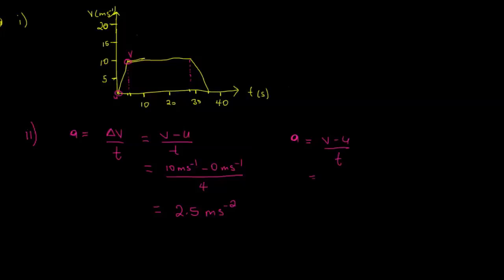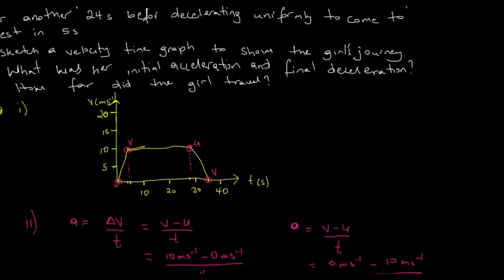In the deceleration phase, u is 10 meters per second and v is 0 meters per second, divided by time t of 5 seconds. That gives us minus 10 divided by 5, which works out to minus 2 meters per second squared. This confirms that deceleration is indeed negative acceleration. Now let's look at part three of the question, which asks us to find how far the girl traveled.